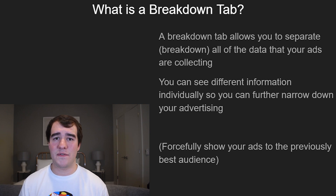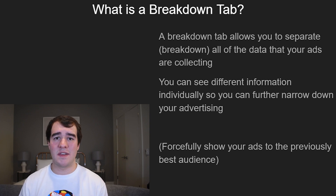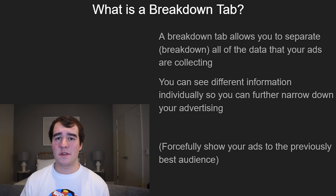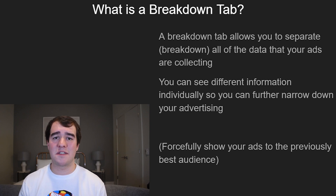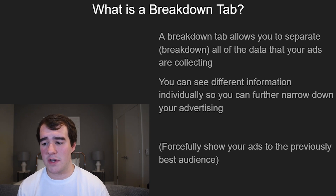Essentially you can see different information inside of your ad targeting individually, so that you can target these audiences individually. For example, if your audiences are primarily targeting 18 plus, you'll be able to see a breakdown of all the age groups — 18 to 24, 24 to 35 — so you can see which age group is the most profitable. I'll show you a perfect example of this towards the end of this video.